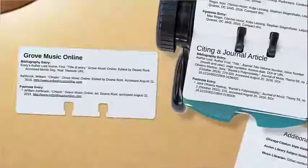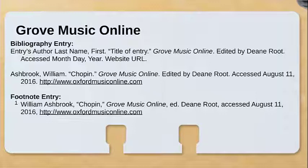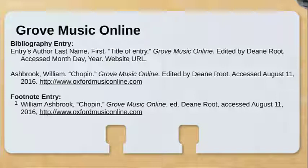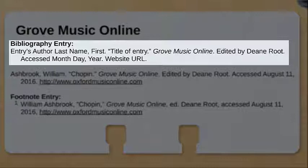Let's look at citing an entry in Grove Music Online. Grove calls itself a dictionary but functions like an encyclopedia, yet it features signed articles by experts in their field. The citation format provided here is a hybrid of the journal article style and the signed article encyclopedia style. Here we have the author name, the title of the entry in quotations, where the entry came from — which is Grove Music Online, written in italics — the editor, which will always be Dean Root, the access month, day, and year, and the website URL.